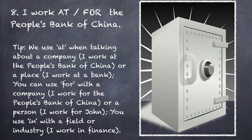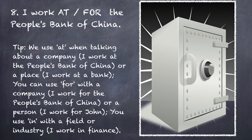Sentence number eight: I work at the People's Bank of China, or I work for the People's Bank of China. We use 'at' when talking about a company or place — I work at the People's Bank of China, I work at a bank. You can use 'for' with a company or a person — I work for the People's Bank of China, I work for John. You would never say 'I work at John.' And you use 'in' with a field or industry — I work in banking, I work in finance — but never 'I work in the People's Bank of China.' You work in a sector.